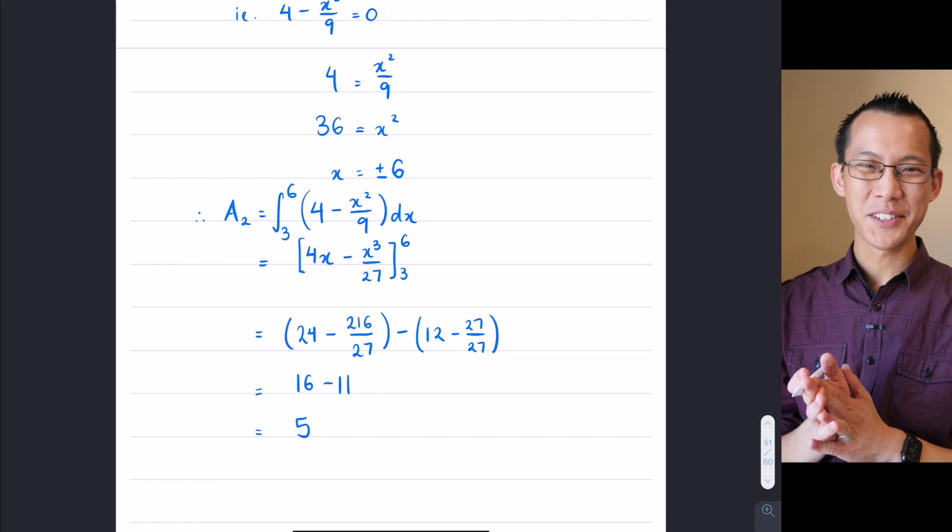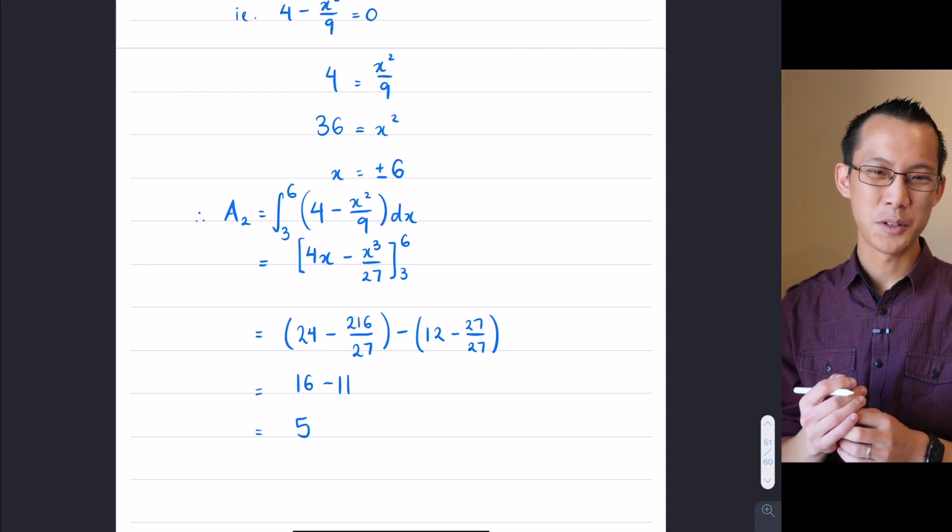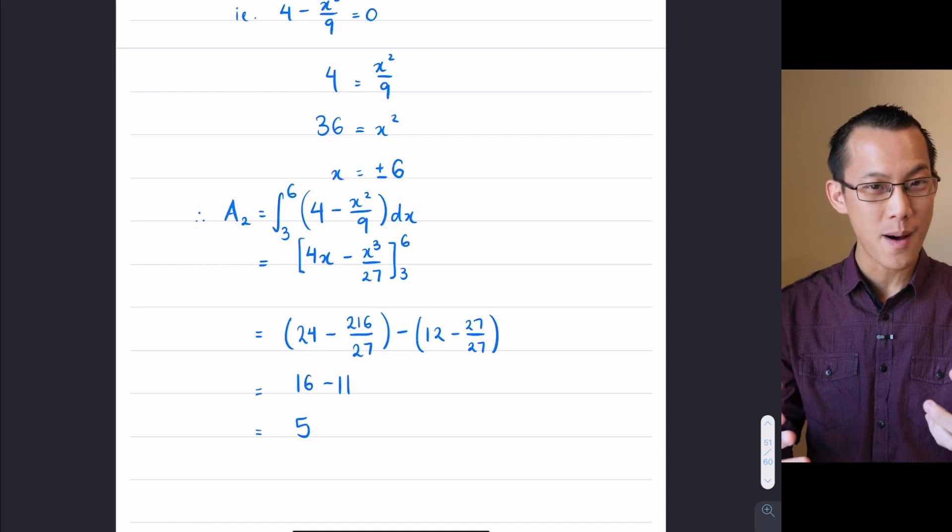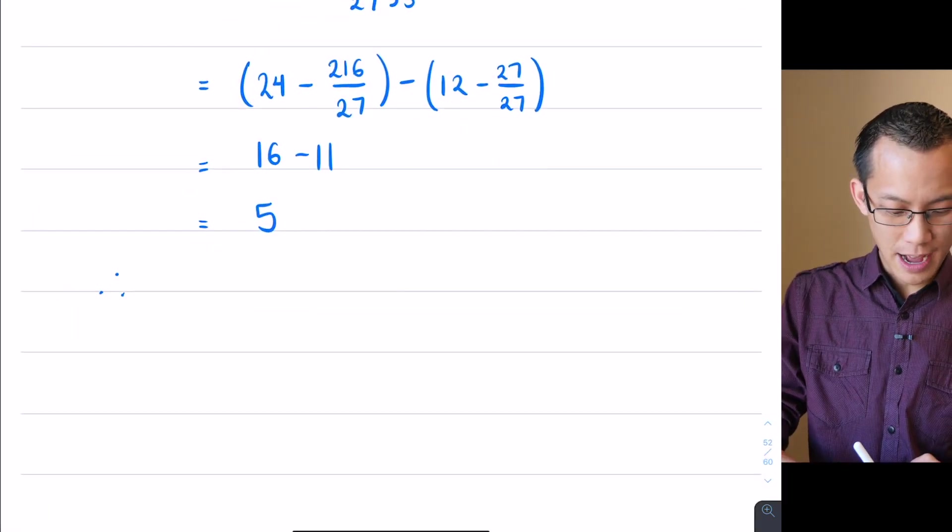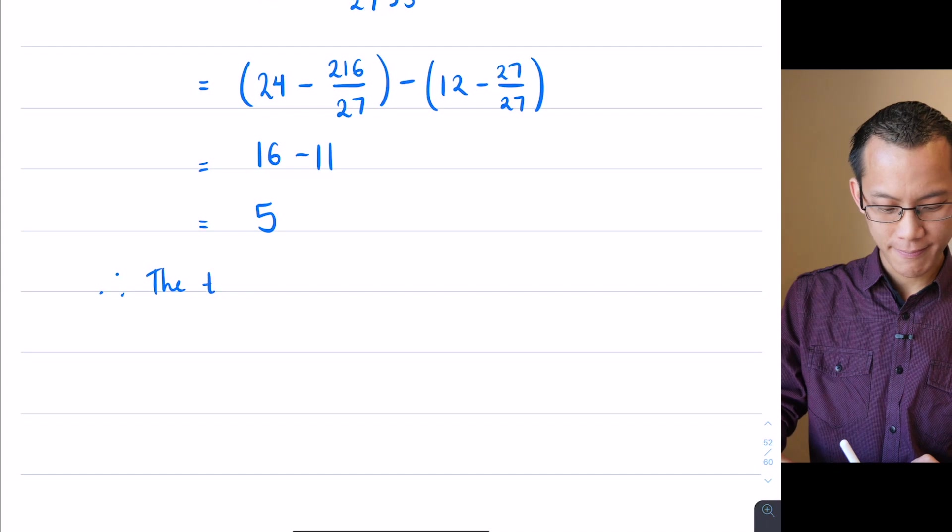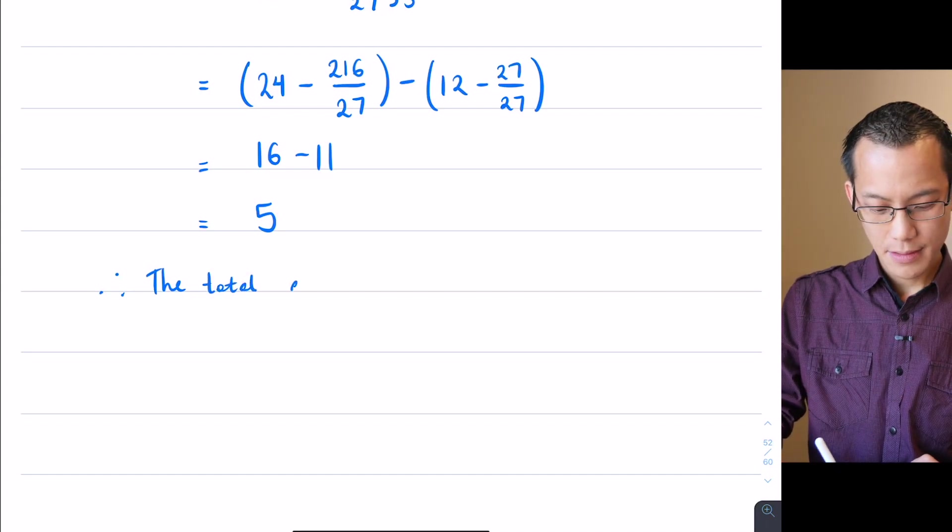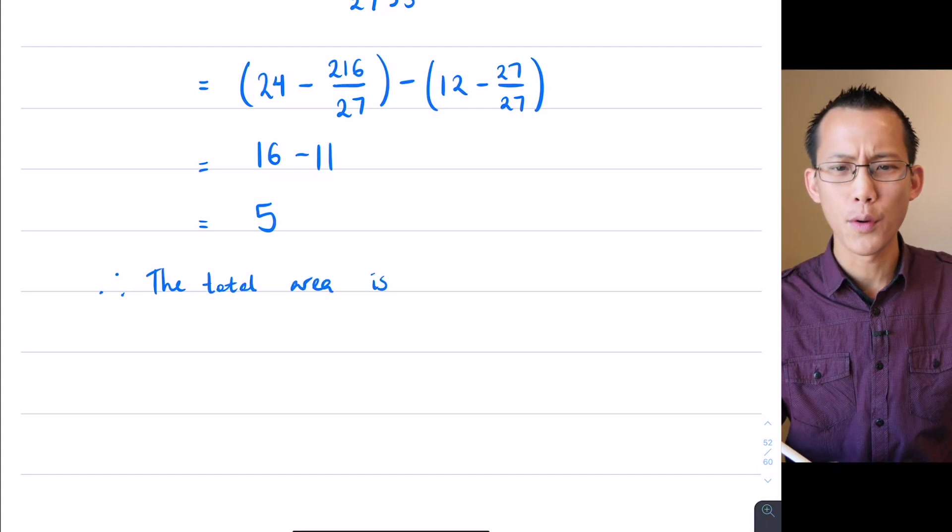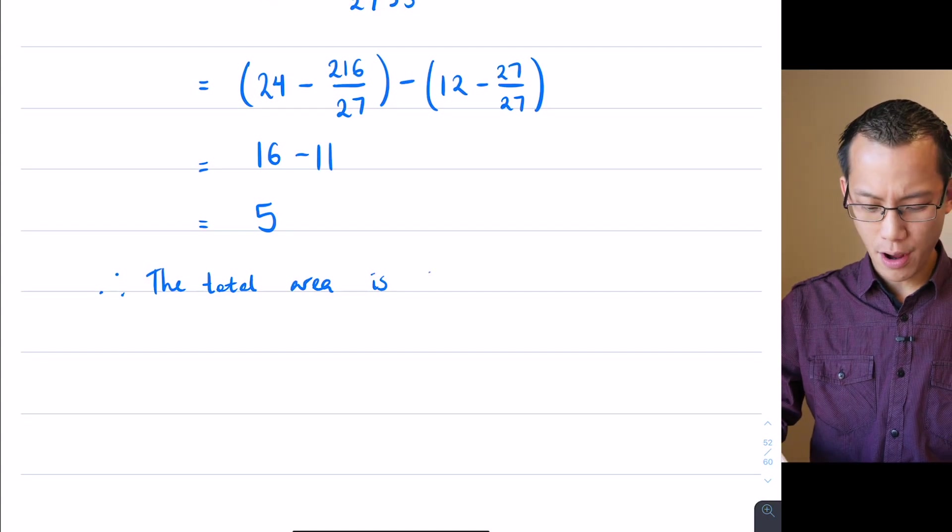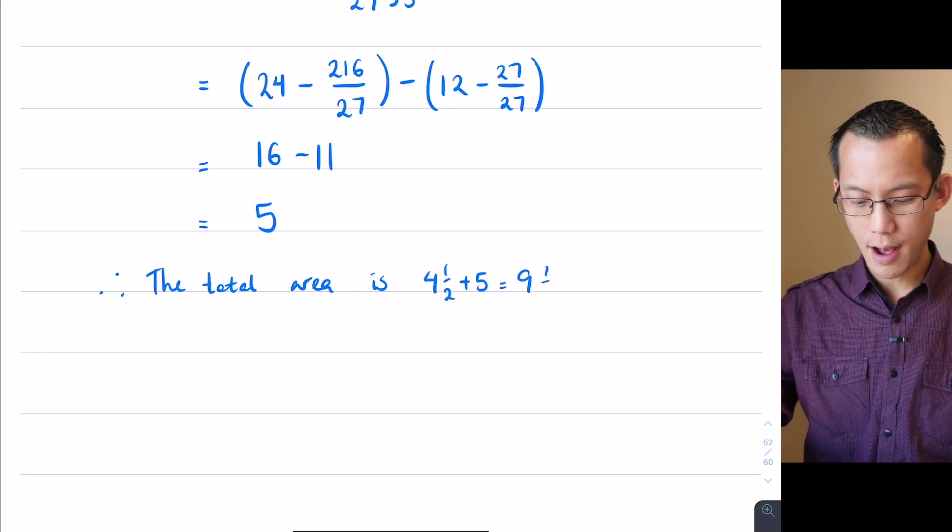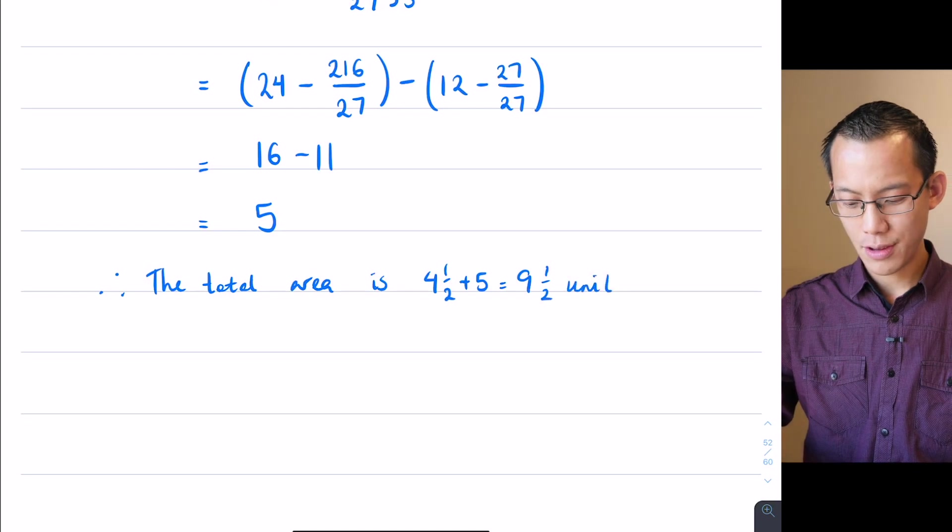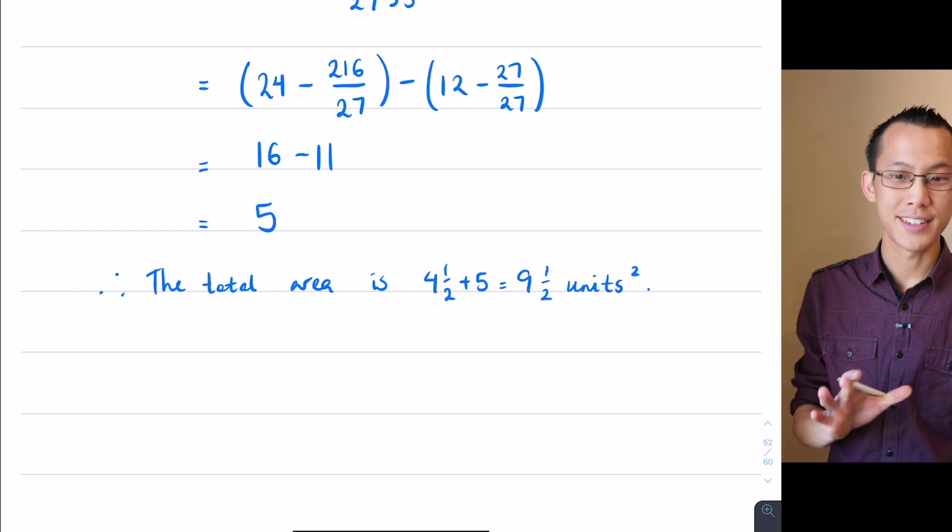And then I identified the integral that was related to A2. So I'm ready to combine and conclude this. I can say, therefore, zoom back in, the total area is, I think we said the first one was four and a half, right? So it's going to be four and a half plus five, which gives me nine and a half square units, like so. Done-ski, okay?